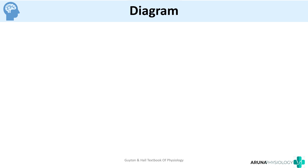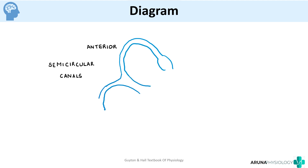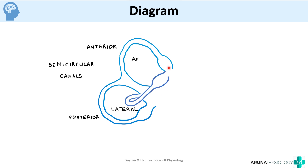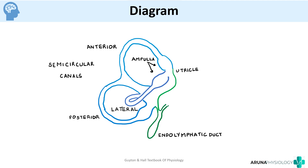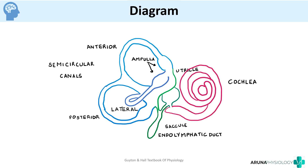Now we can draw a diagram showing the vestibular apparatus. It consists of semicircular canals as well as utricle and saccule. We draw the three semicircular canals: the anterior, posterior, and lateral semicircular canals. Remember to draw the ampulla at the end of each semicircular canal. These semicircular canals open into a sac-like structure called the utricle, which ends into the endolymphatic sac. Below the utricle we have the saccule, a globular sac-like structure connected to the cochlea, which is the organ for hearing.